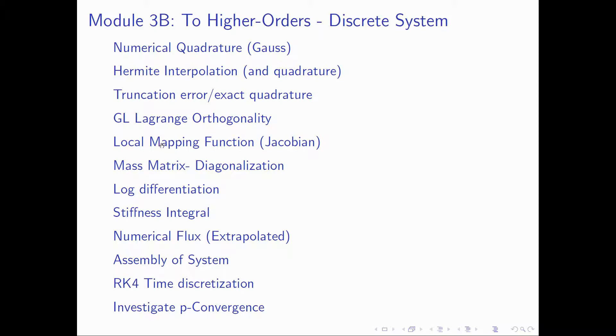We'll take a brief interlude to look at what's necessary in terms of a local mapping function to account for arbitrary domains. Then we'll apply all these techniques to be able to calculate the mass matrix and actually be able to find a diagonalizable version of it.